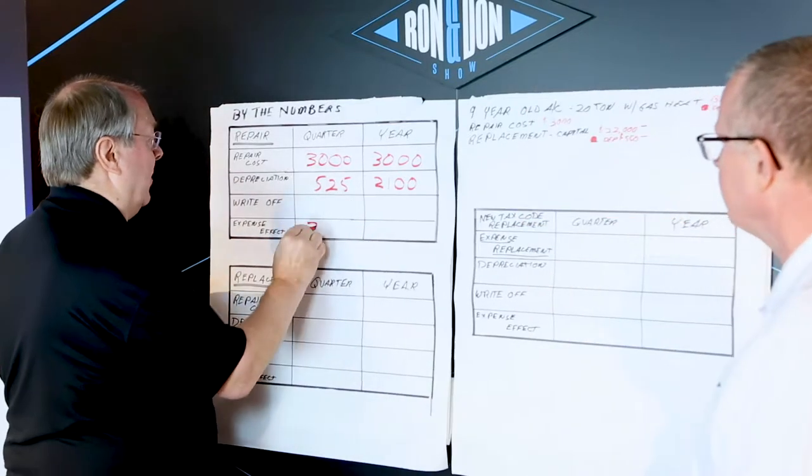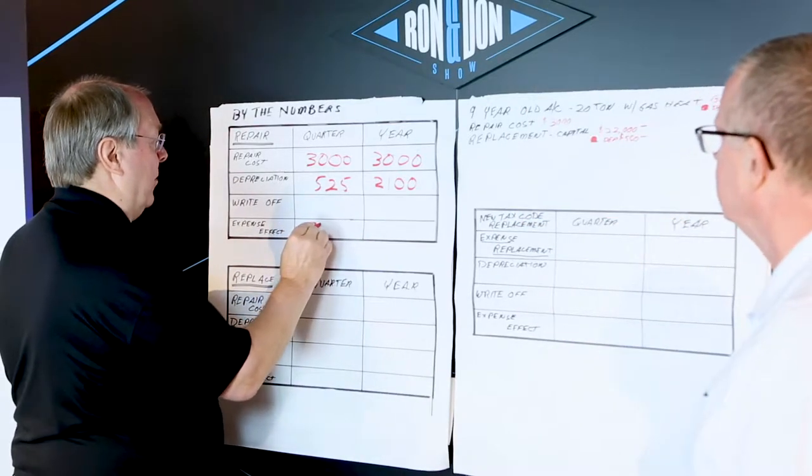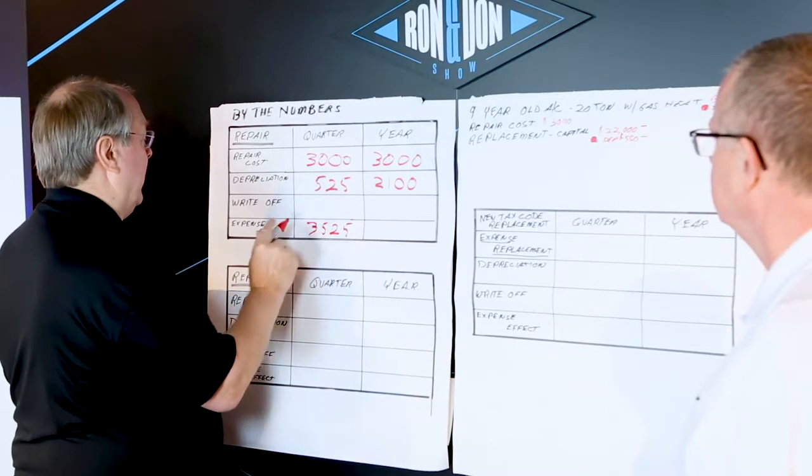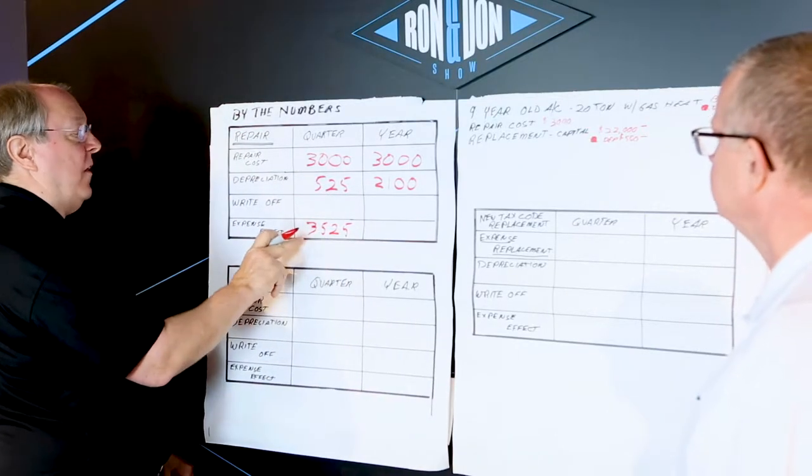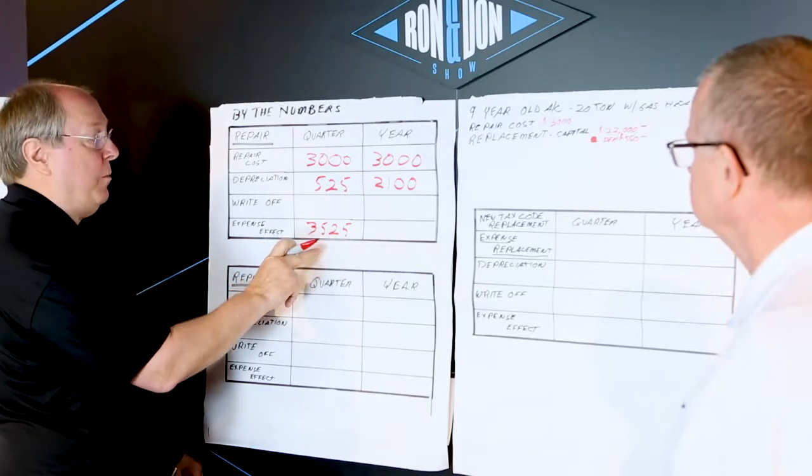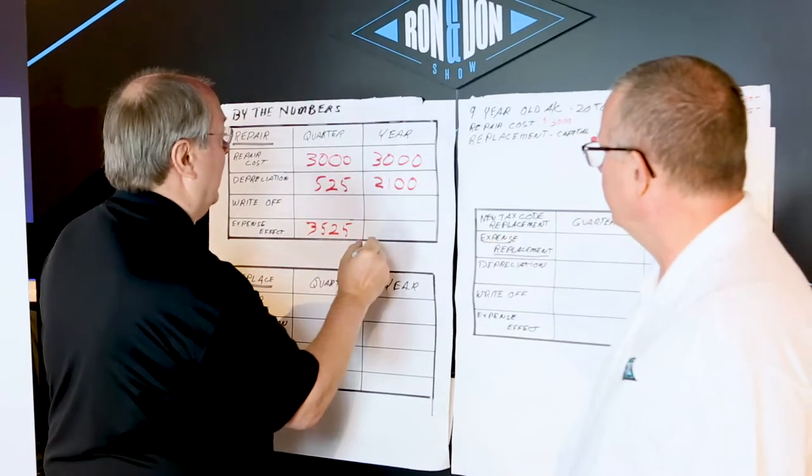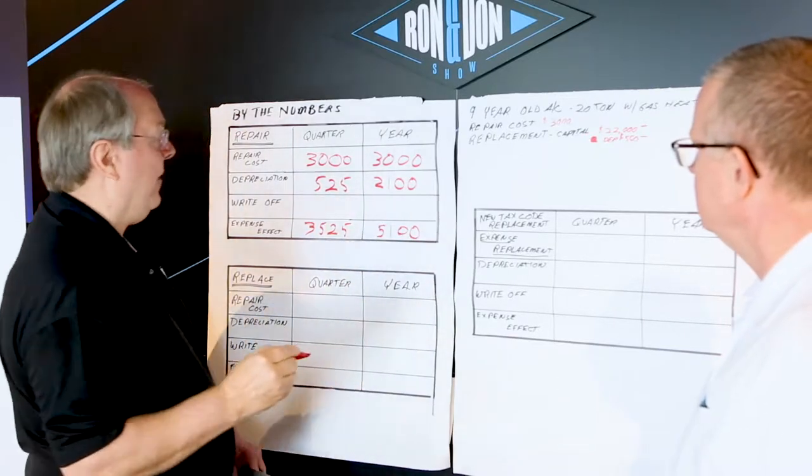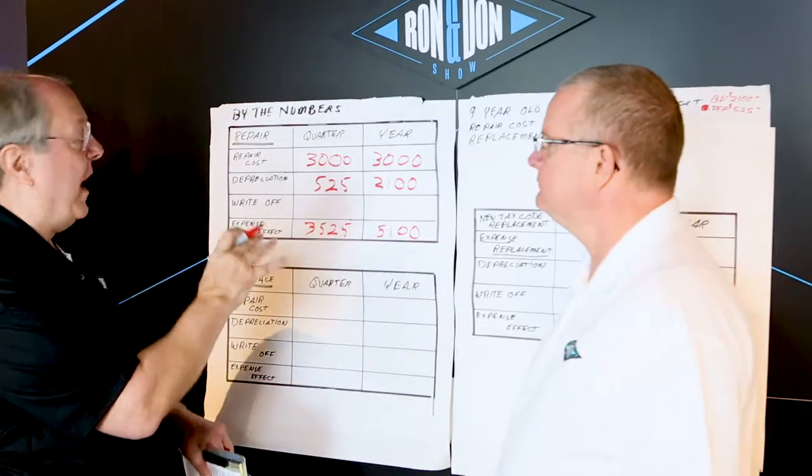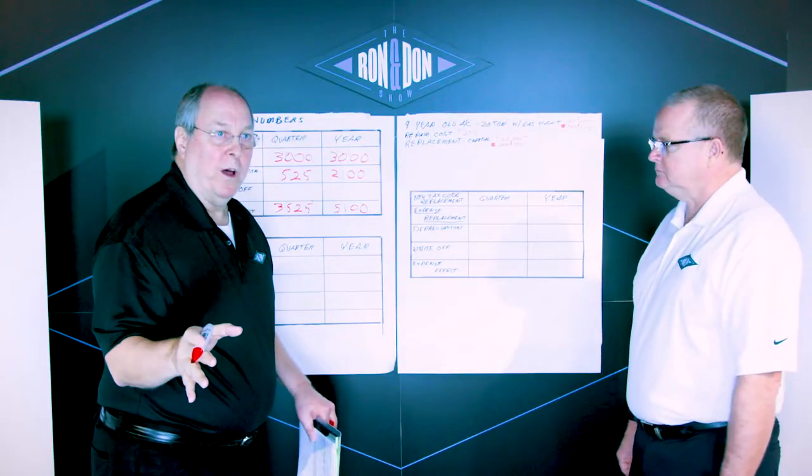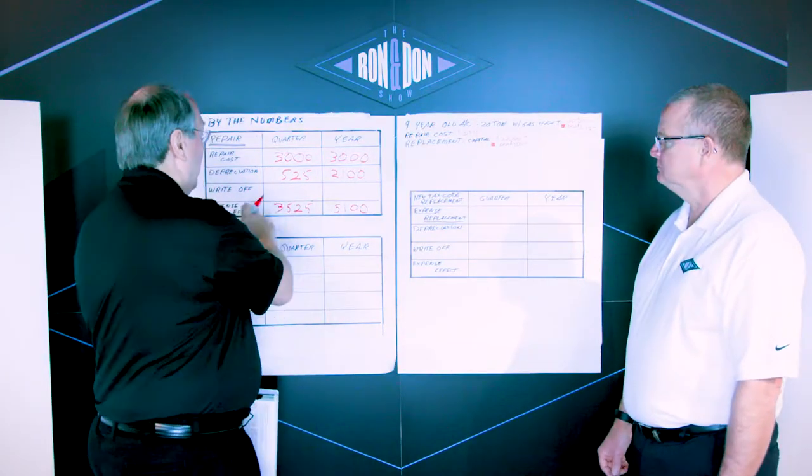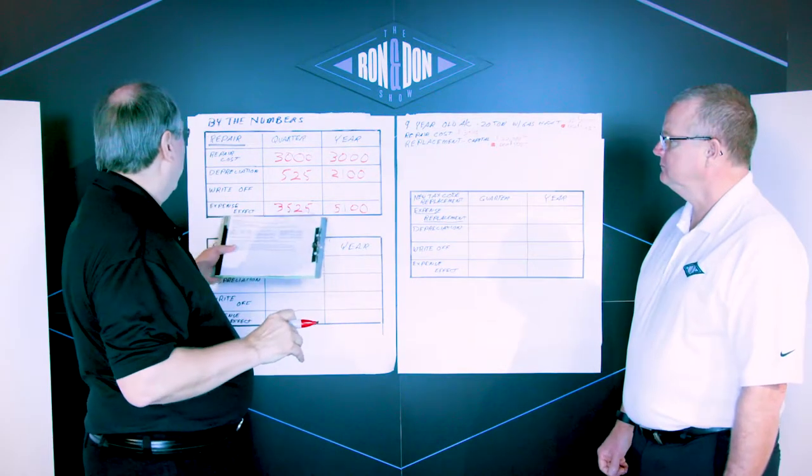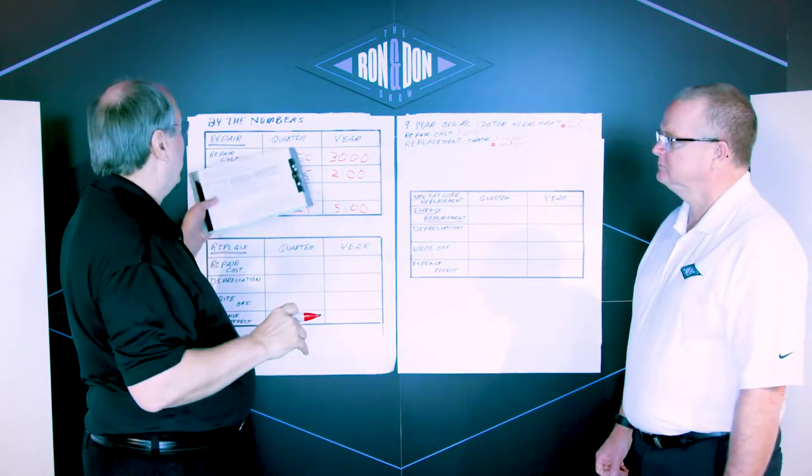So in review, a $3,000 repair, and remember we're doing a repair versus replace analysis. So we want to get all the data in the repair side so we can make an informed decision. $3,000 in repair in the quarter carries over to the year. Depreciation over the entire year of $2,100 means it's $525 per quarter. This will get us down to $3,525 for the total expense, what's going to hit the expense line of the P&L. And what's it going to be for the year? Well it looks like it's going to be around $5,100. So we know what the expense effect will be of that repair.